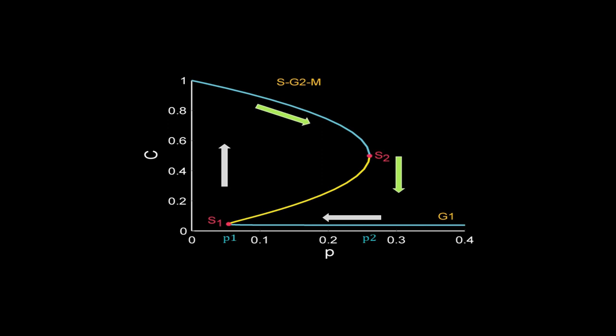So here I have shown the complete journey of the cell through different steady states. The white arrow shows the path followed by the cell when P decreases from high value. The green one is for the return journey. Here the paths of the onward and backward journeys are different. This behavior is called hysteresis.